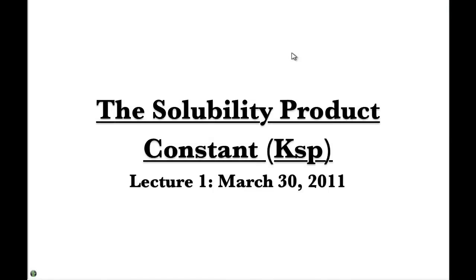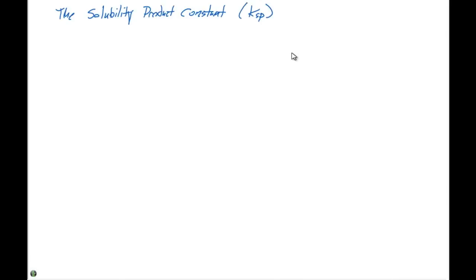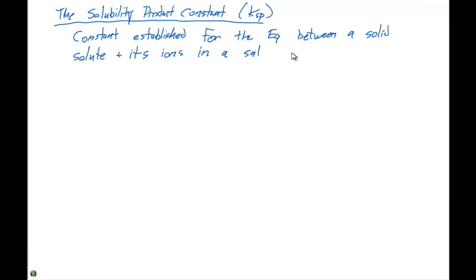In terms of looking at the specific K, when we talk about salts dissolving, it's called the solubility product constant. And we abbreviate this as KSP. This is the entire focus of lab number one. It's a two lab period lab. And the solubility product constant is the constant established for the equilibrium between a solid solute and its ions in a saturated solution.